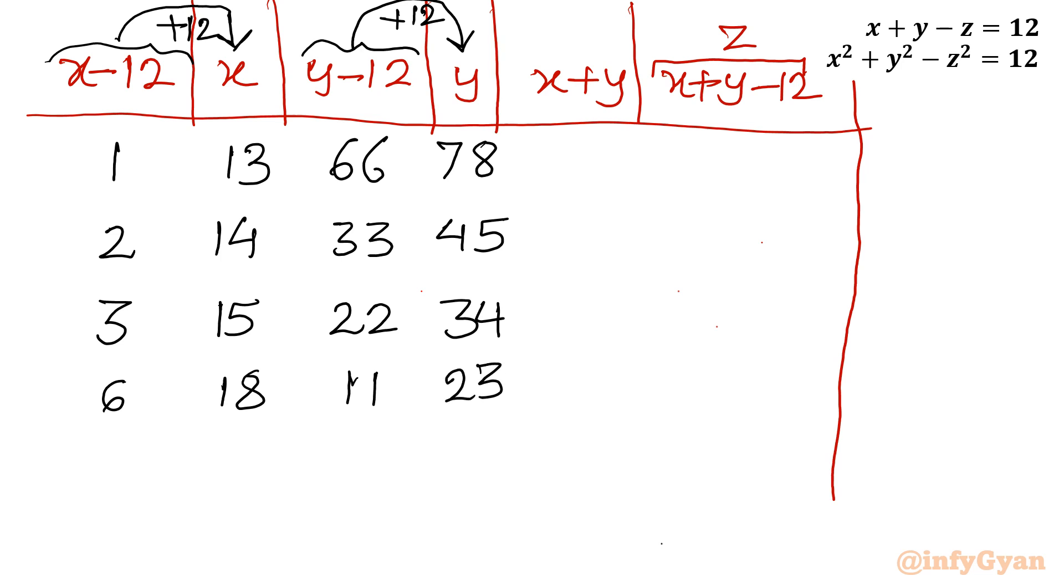Now I have to add x plus y, this column and this column. So 78 plus 13 is 91, 14 plus 45 is 59, 15 plus 34 is 49, 18 plus 23, I will be writing 41. Now take away 12 from this column, so z value is 79, 59 minus 12 is 47, 49 minus 12 is 37, and 41 minus 12 is 29.